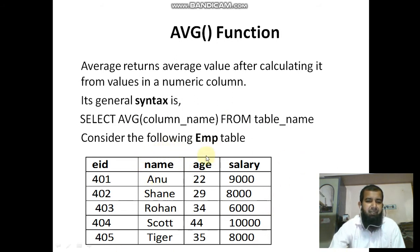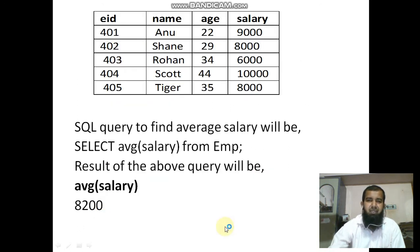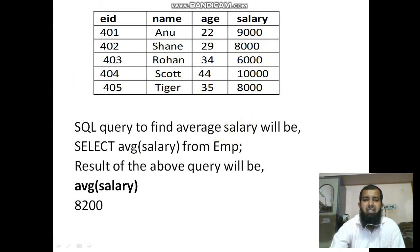Consider the following EMP table — there are five employees. Suppose you want to find the average salary: find the total first, then divide by the number of records. The SQL query is SELECT AVG(salary) FROM EMP. So 9,000 + 8,000 + 6,000 + 10,000 + 8,000 = 41,000, divided by 5 equals 8,200. The average salary is 8,200.